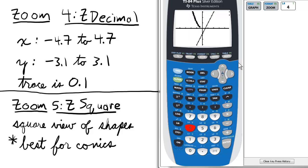For the x-axis, it goes from negative 4.7 to 4.7. And the y is negative 3.1 to 3.1. It's pretty cool as a default zoom in.